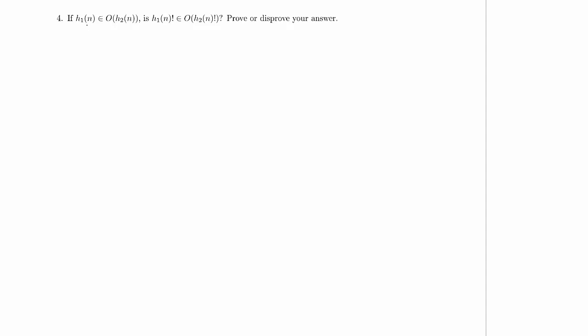So this one gives us two functions, h1 and h2, and we've got that h1 is an element of big O of h2, and we want to know if h1 factorial is an element of big O of h2 factorial, and then we're supposed to prove or disprove our answer.